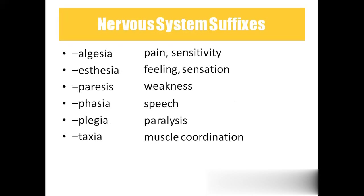Coming to the suffixes: -algesia means pain or sensitivity — so analgesia means absence of pain or sensitivity. -aesthesia means feeling or sensation — so anesthesia means lack of feeling and sensation. -paresis means weakness. -phasia means speech. -plegia means paralysis. -taxia means muscle coordination — for example, ataxia means absence of muscle coordination.